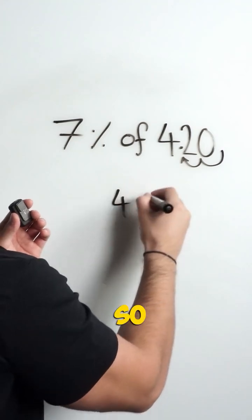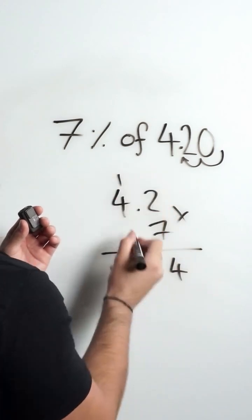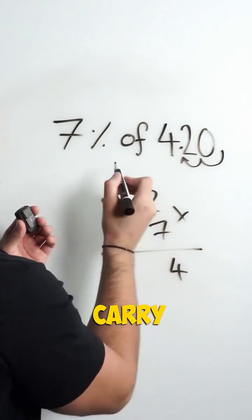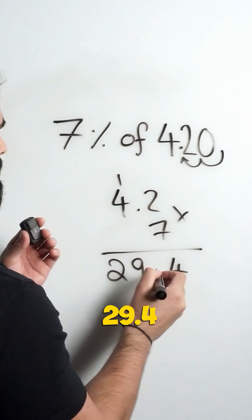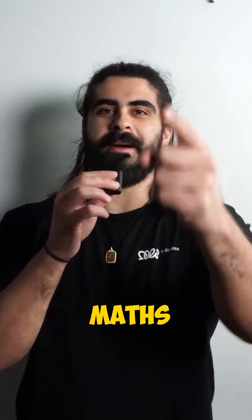So 4.2 times 7: 2 times 7 is 14, 7 times 4 is 28, carry the one, 29 point 4. Nice! Follow me for more math content.